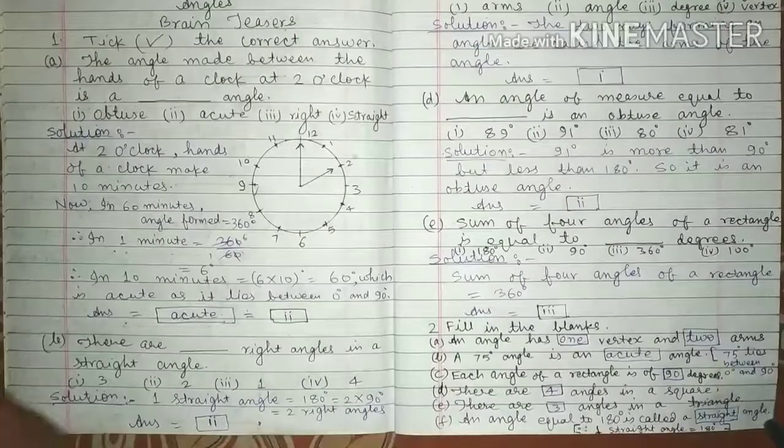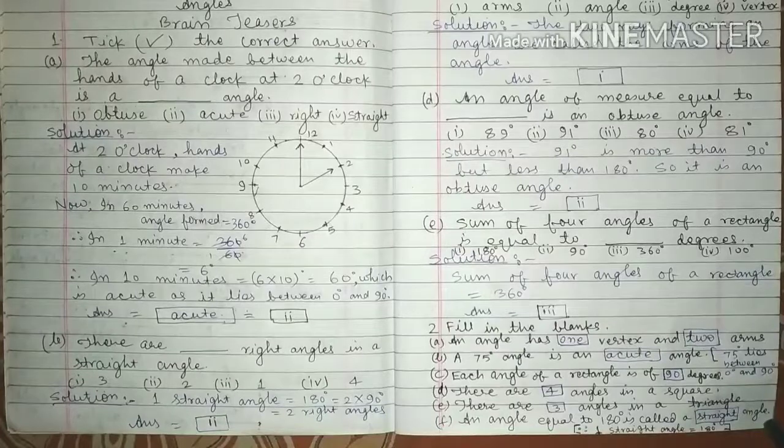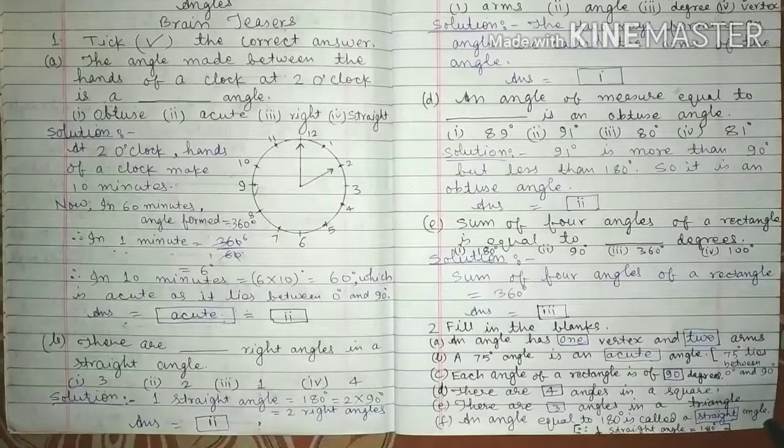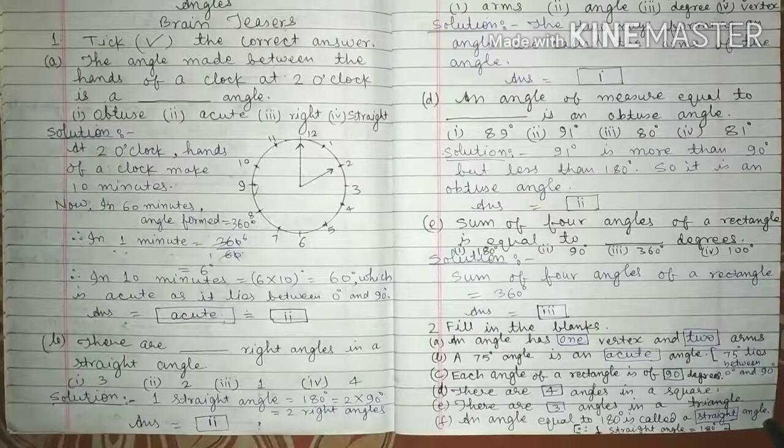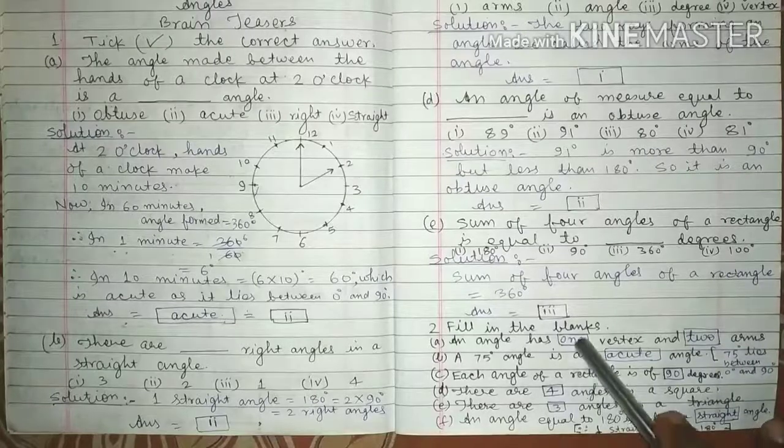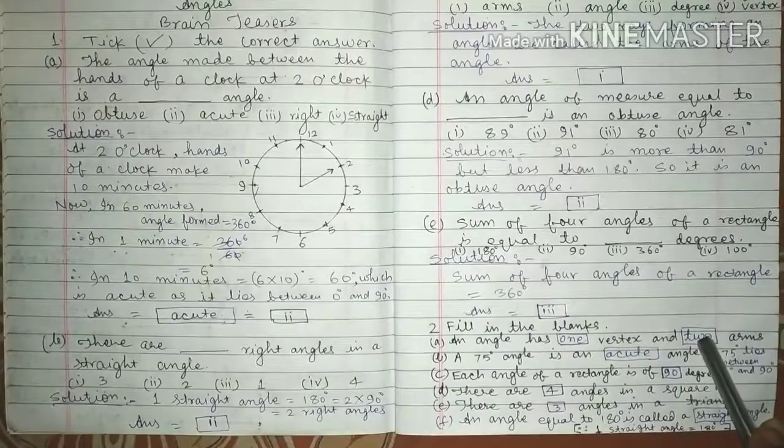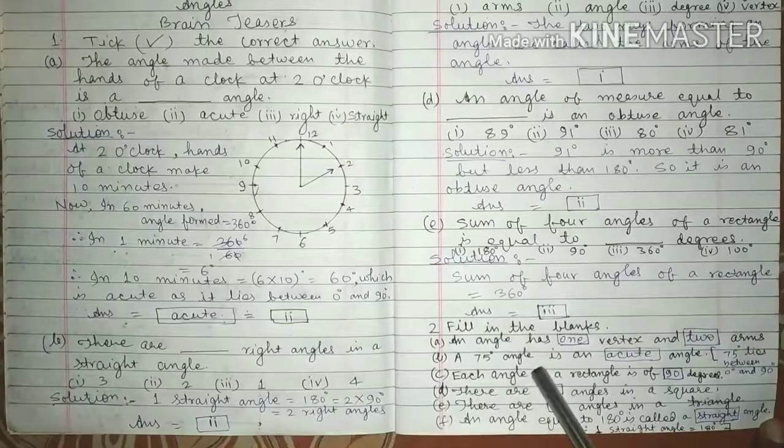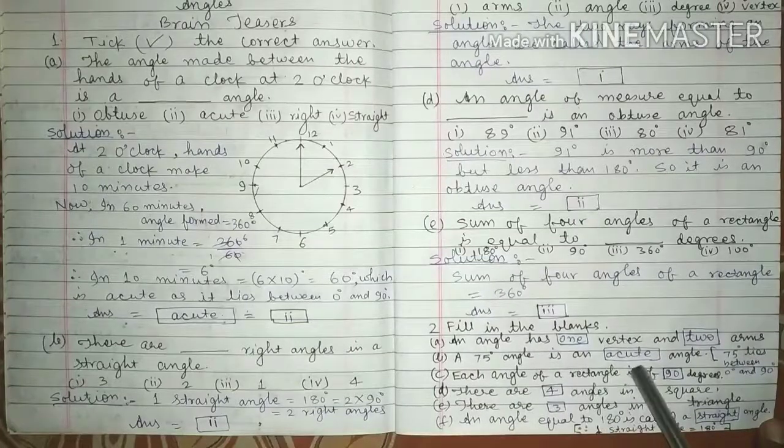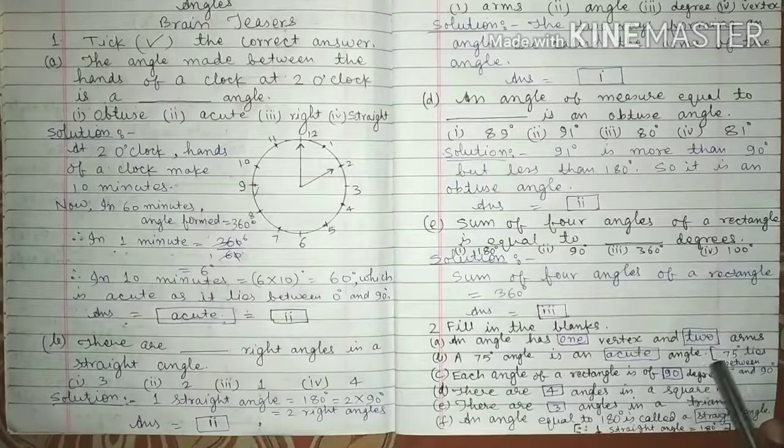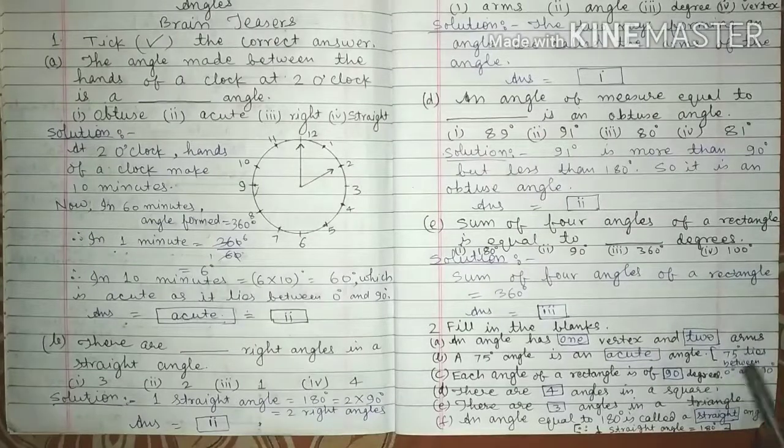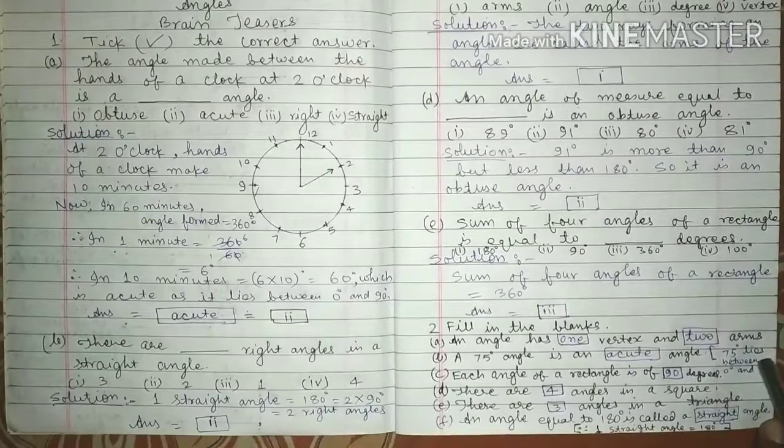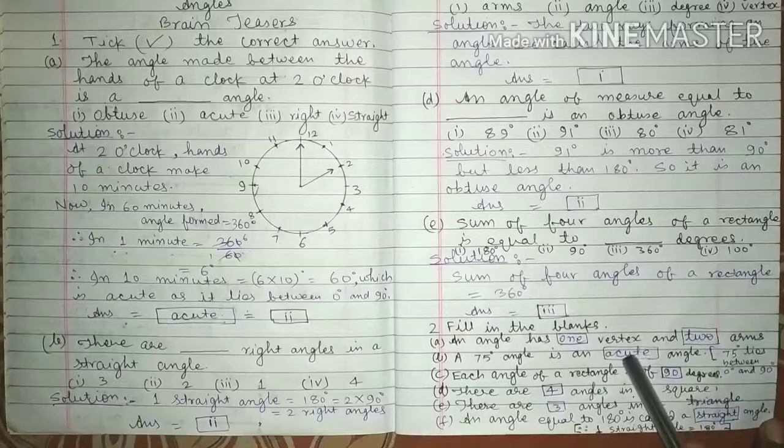Fill in the blanks. An angle has 1 vertex and 2 arms. So we fill here 1 vertex, here we fill 1 and here we fill 2. Question number B. A 75 degree angle is an acute angle. 75 degree lies between 0 degree and 90 degree. So it is an acute. So we fill here acute.